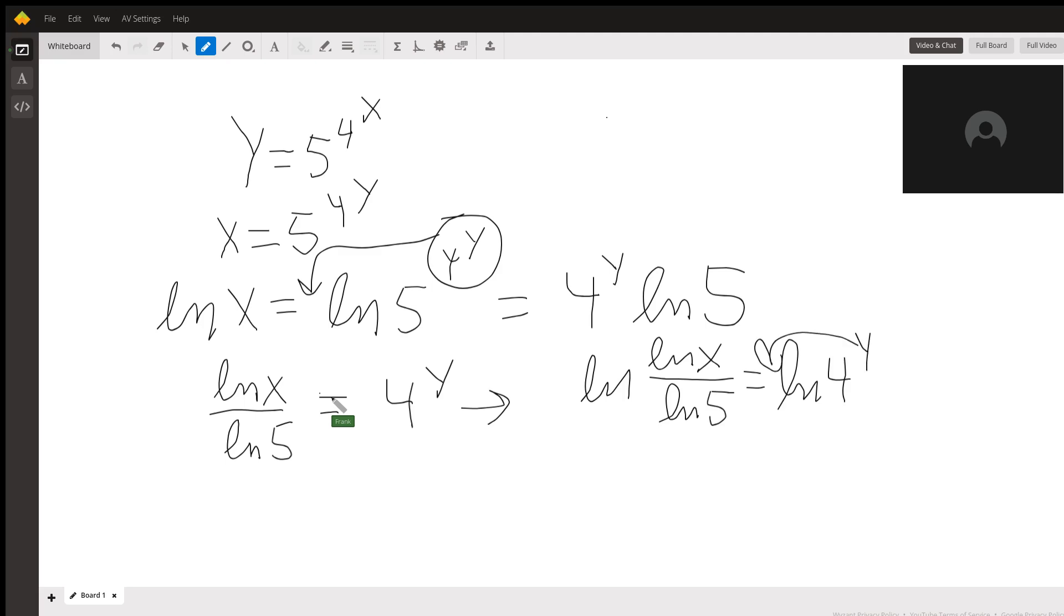And again, exponent in front equals y times natural log of 4. Then solve for y by dividing both sides by natural log of 4.